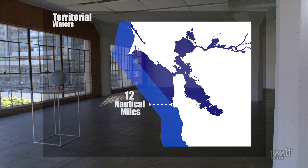No stopping to sightsee. Also, submarines must stay surfaced with a national flag flying. Fishing, polluting, weapons practice, and spying are not allowed.